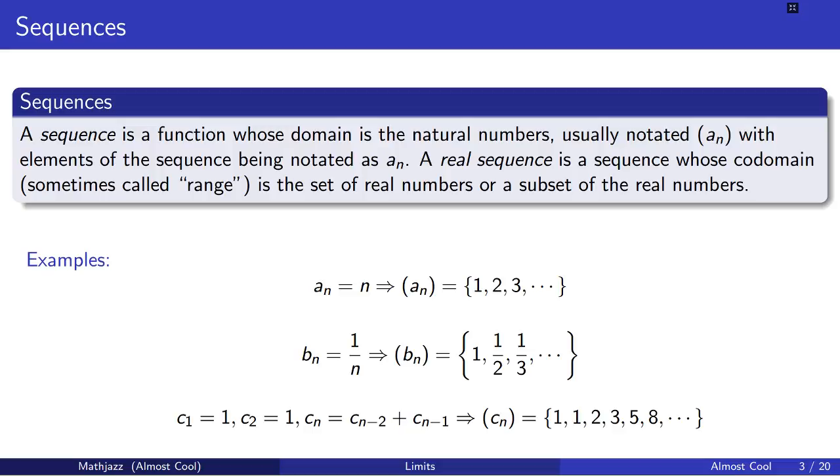This sequence — the Fibonacci sequence — goes 1, 1, 2, 3, 5, 8, 13, and so on. The set of equations on the left hand side of the arrow describe the Fibonacci sequence on the right hand side.